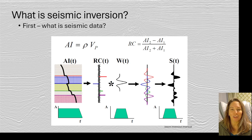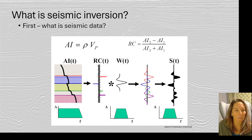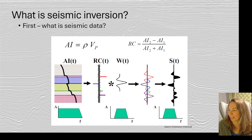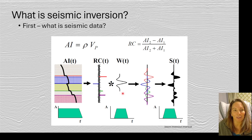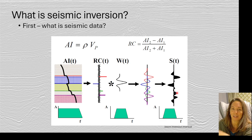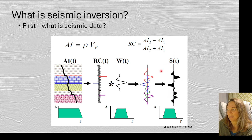When we talk about seismic inversion, we want to think about what it's really telling us. Here's a simple way to envision it: we have our acoustic impedance on the left. From that we calculate the reflection coefficient, convolve it with the wavelet, and we get all of our individual reflections — that gives us our synthetic seismogram or seismic data. Now in the inversion we want to work the other way: from the seismic, we want to go all the way back to the acoustic impedance.